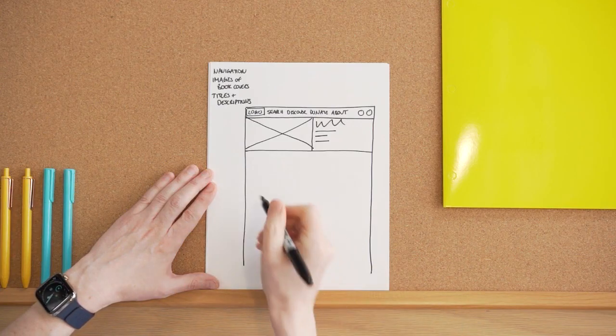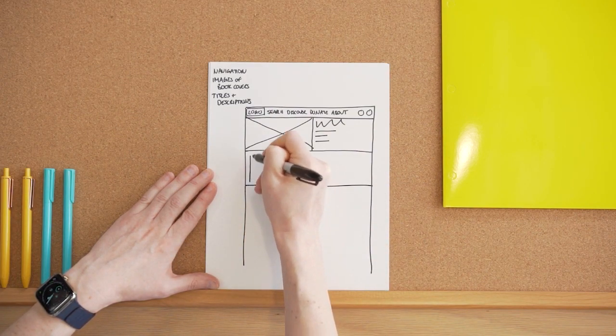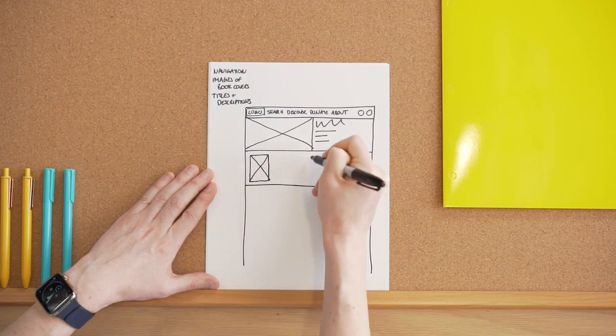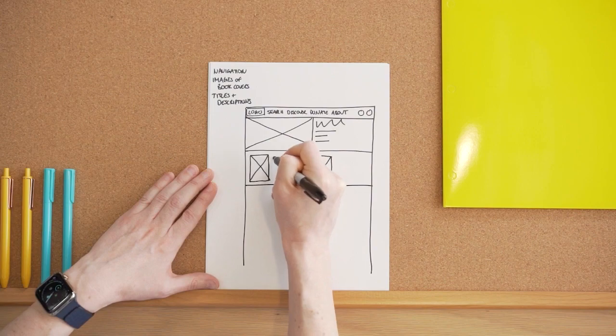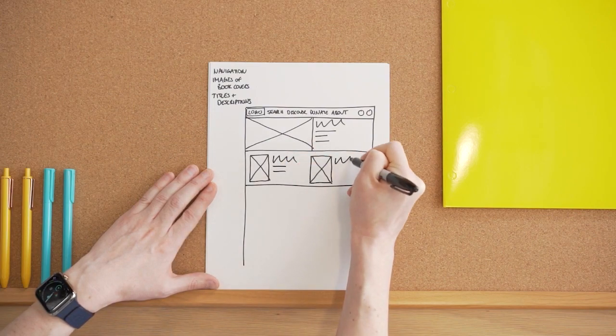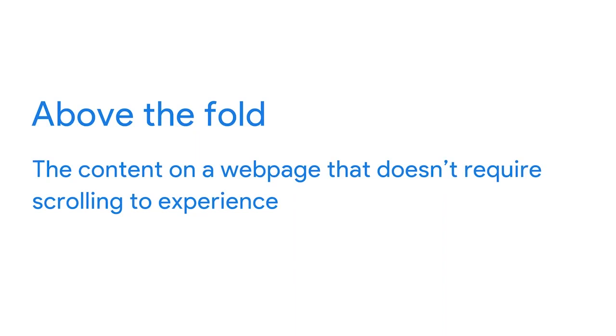Below that, I want to include squares and rectangles showing visitors the latest books. I'll add a long line to create a new area of the page, then draw rectangles with an X inside to show where images might go. I'll also add lines to show a corresponding description to the right of each rectangle. I'm adding these two rectangles above the fold so users immediately notice them when landing on the homepage.